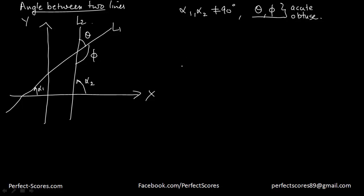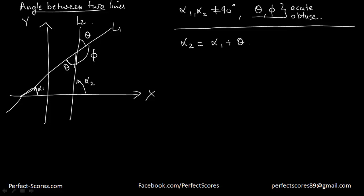Let's find the relationship between these angles. Since theta and its vertically opposite angle are equal, and using the exterior angle theorem in the triangle formed, the external angle alpha two equals the sum of the opposite interior angles: alpha two = alpha one + theta. Therefore, theta = alpha two minus alpha one.